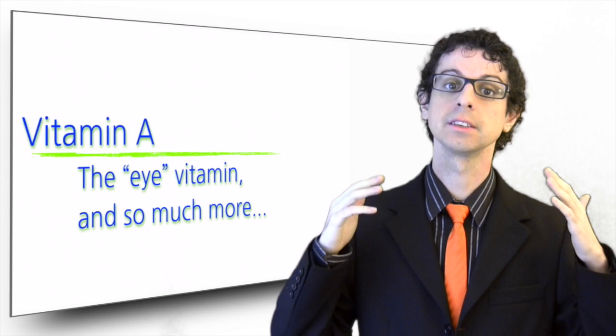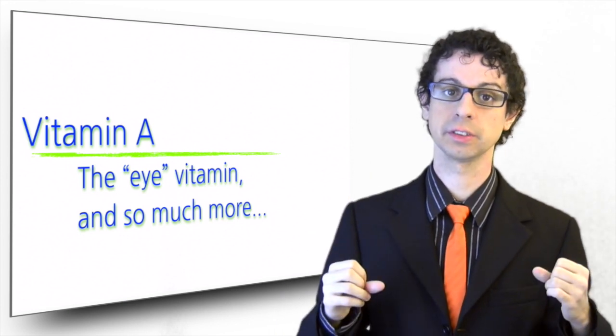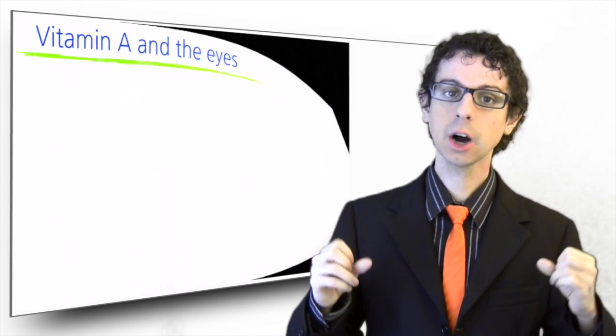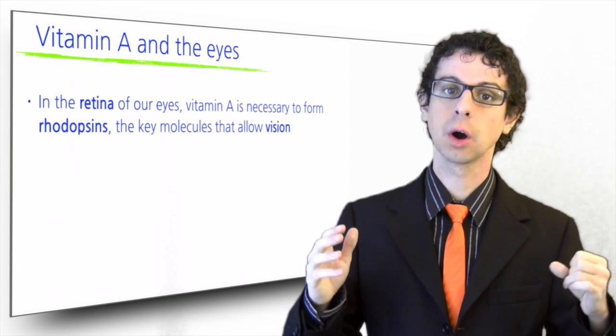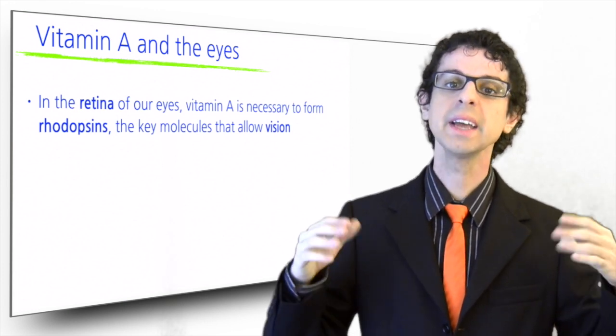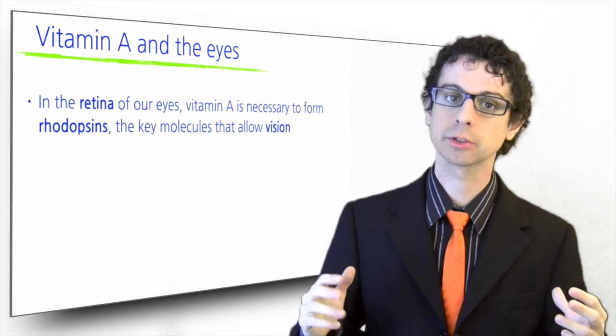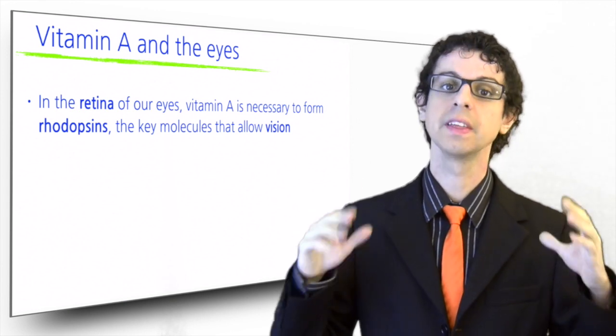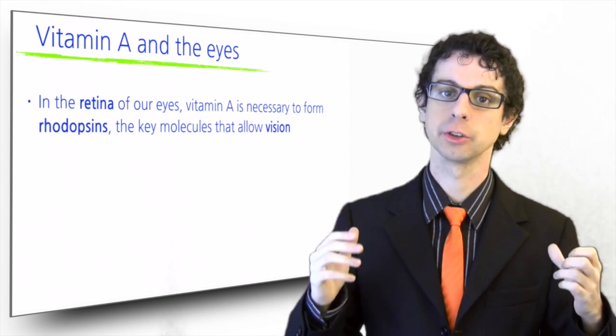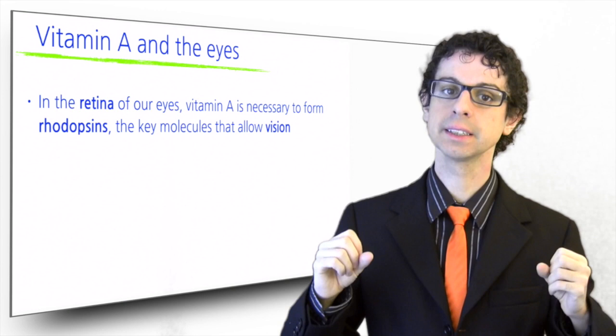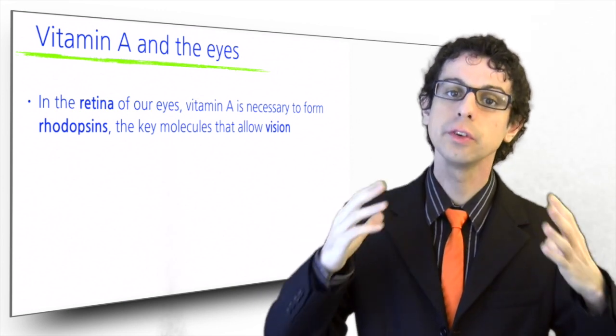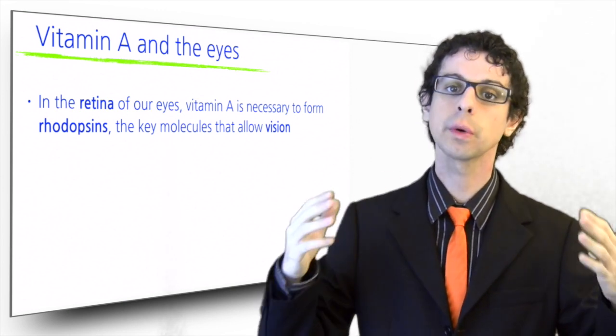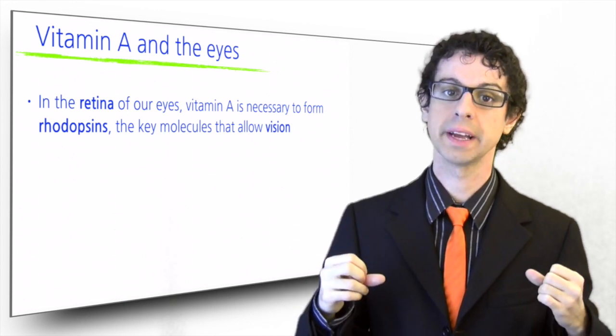Night blindness is a typical symptom of its deficiency. In the retina of our eyes, where rods and cones are located, vitamin A binds to specific structures to form rhodopsins, the key molecules that allow vision. They receive light signals from the environment and convert them to electrical signals that can be forwarded and interpreted by our brain.